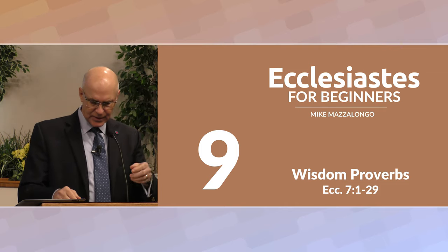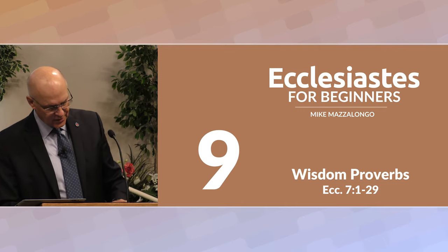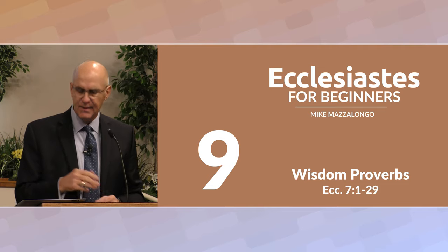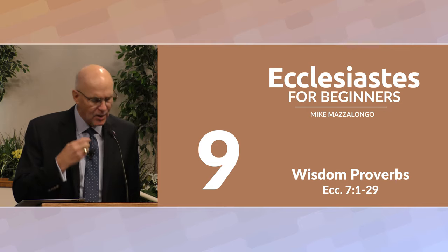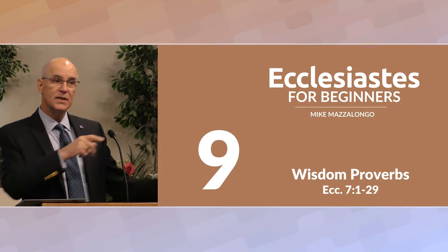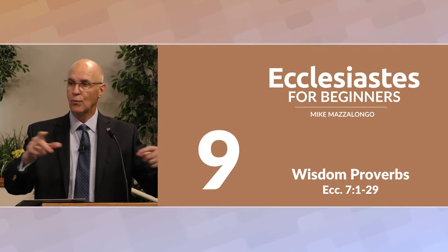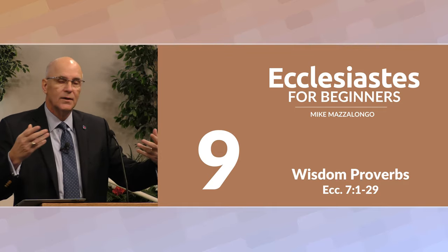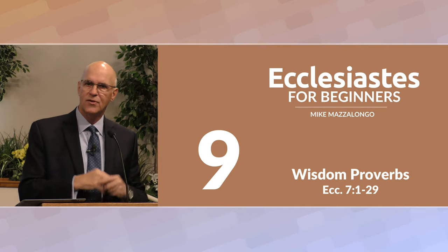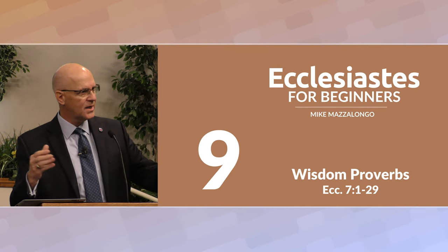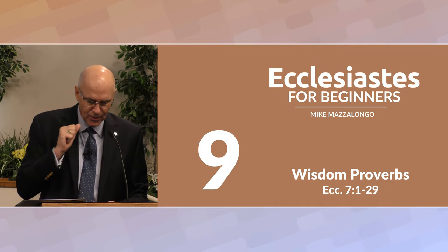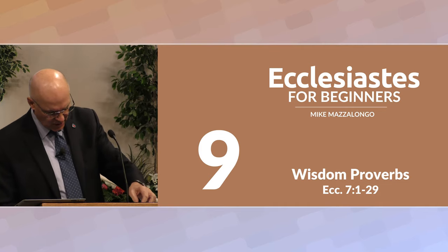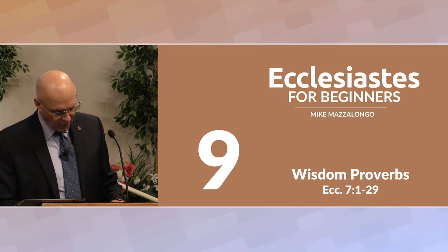In chapter seven, we see Solomon turning again to God, and this turning is seen as he begins to write about true wisdom. He's been writing about the wisdom — the things he's learned about life under the sun, life separate from God. Now he's going to write about true wisdom, and he does this by writing his thoughts in the form of Proverbs.